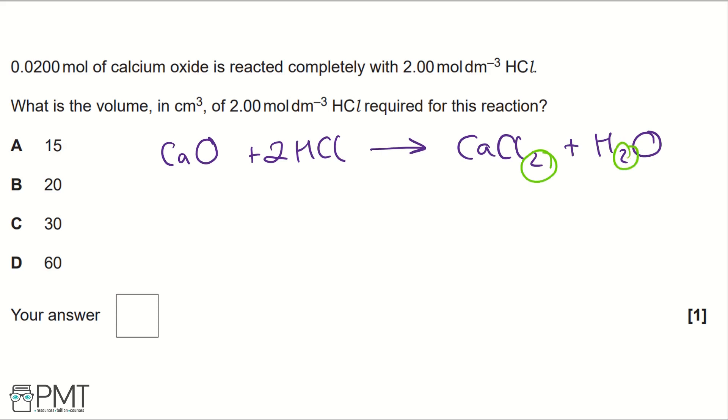So firstly we need to factor in the molar ratio. We've got a 1 to 2 molar ratio so the moles of hydrochloric acid is 0.02 multiplied by 2 which gives us 0.04 moles of hydrochloric acid.